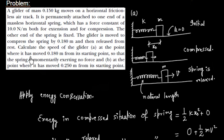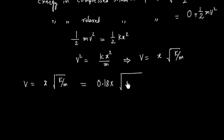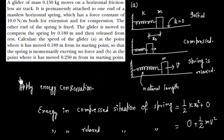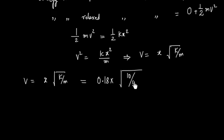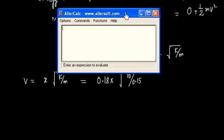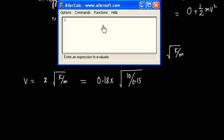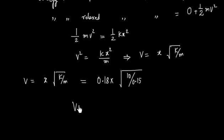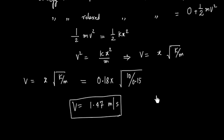K is given as 10 Newton per meter, and mass is 0.15 kg. Calculating: V equals 0.18 multiplied by the square root of 10 divided by 0.15. This gives approximately 1.469, so around 1.47 meter per second. All values are in SI units, so velocity is in meter per second.